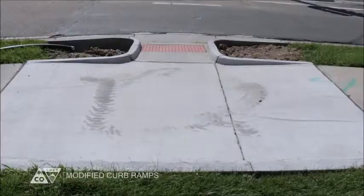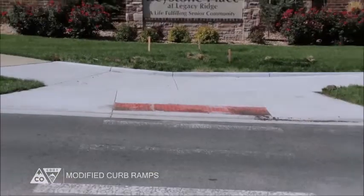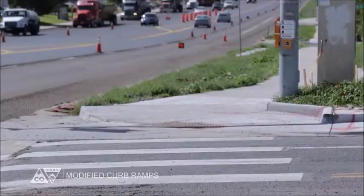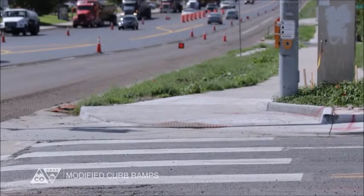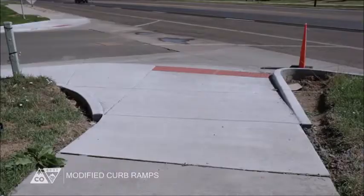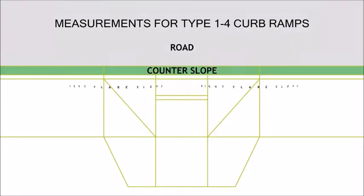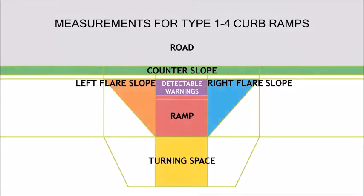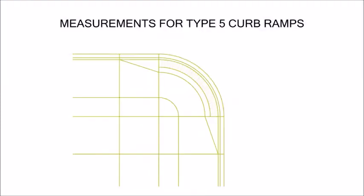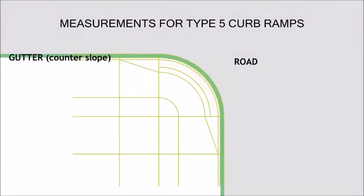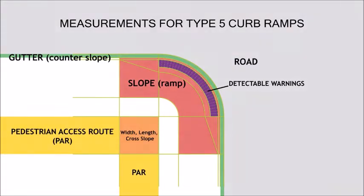Occasionally there are constraints that make a fully standard, compliant curb ramp design impossible. We call these modified curb ramps, and it will be up to you to take all measurements that still apply to accessibility. Many of the required accessibility measurements are taken the same way for curb ramp types 1, 2, 3, and 4. In this video we will continue the instructions for measuring types 1 through 4 and address Type 5 measurements separately.